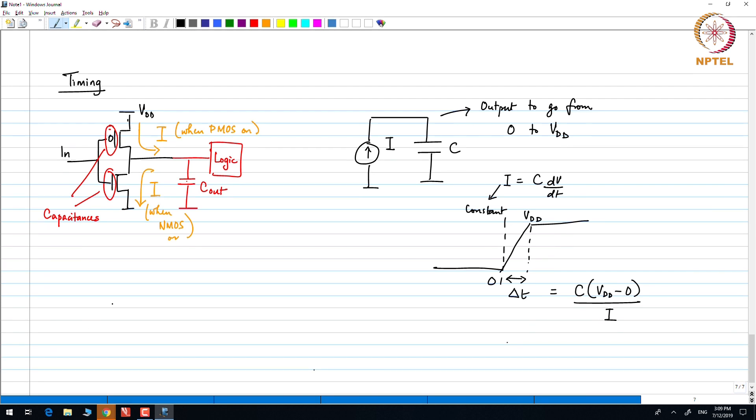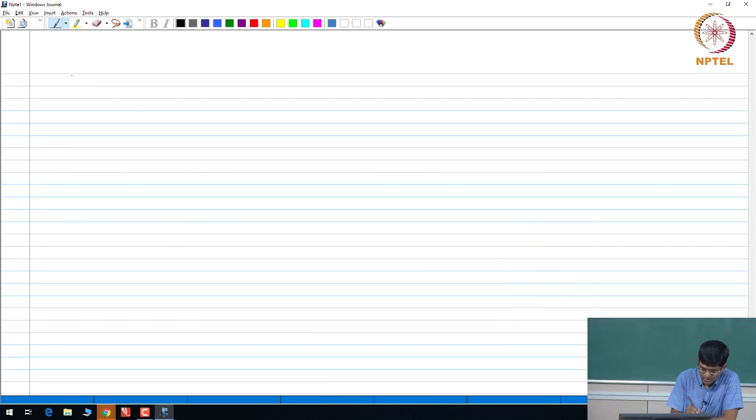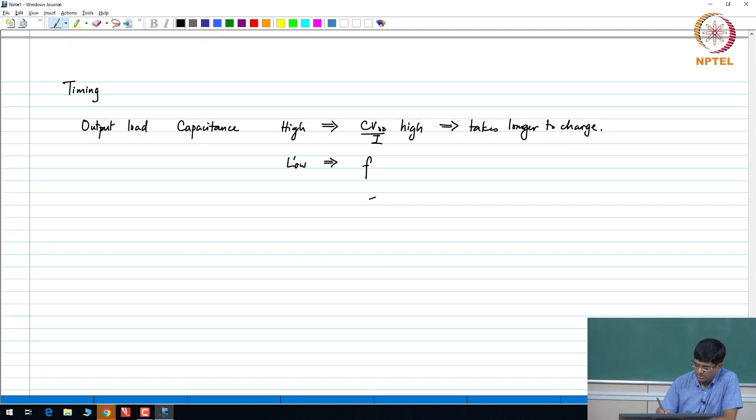What that in turn means is if the output load capacitance is high, it means that C Vdd by I is going to be high, it takes longer to charge. Conversely, if it is low, the output would charge faster. In other words, it would switch faster. So, this is one of the most important things that you need to keep in mind.